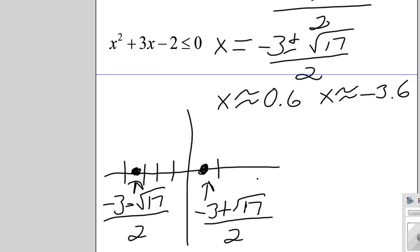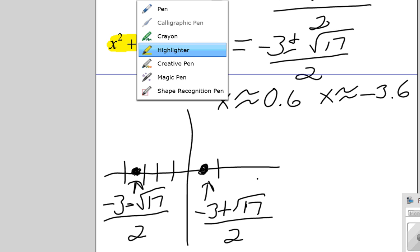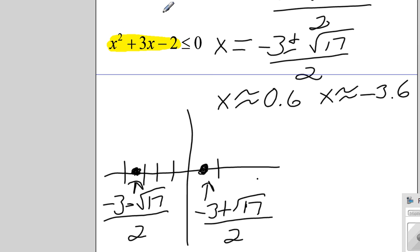Remember that this quadratic equation here is a parabola. It's concave up because a is positive. So let's just draw a concave up parabola that intersects the x-axis at those points.